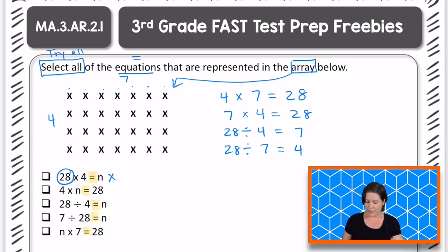The next one, 4 times n equals 28. So 4 times n. n right there is a variable. And n is the variable for all of these. And n in this case represents which value? 7, right? 4 times 7. That's this one right here. 4 times 7 equals 28. Where the value of n equals 7. So we can go ahead and keep this answer choice.